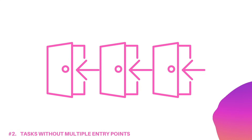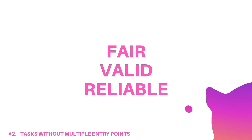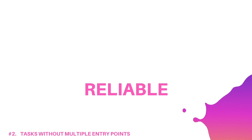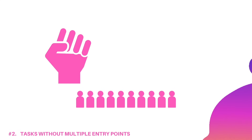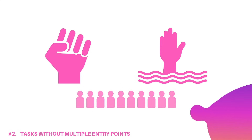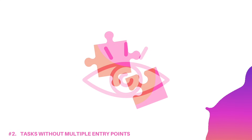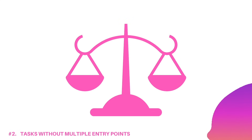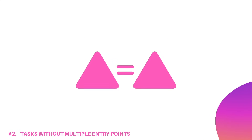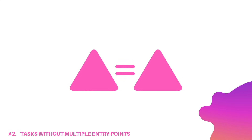Barrier number two: tasks without multiple entry points. When tasks do not have multiple entry points, we limit how fair, valid, and reliable they are. Our learners each come with their own strengths and learning needs, and tasks that allow them to demonstrate their learning in ways that are best suited to them are the most equitable.